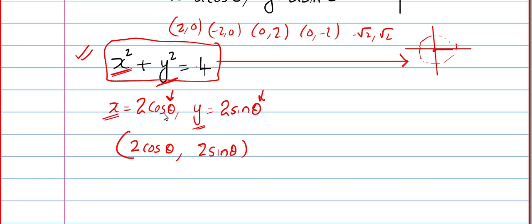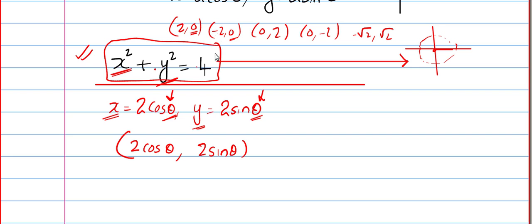In parametric form, choosing points becomes easier because you use a third variable. If I put x = 2, I get y = 0. If I put y = 0, I get x = ±2. If I put x = 1, I get y = ±√3. Plot all the points and you get the circle. That's the logic in the Cartesian equation.